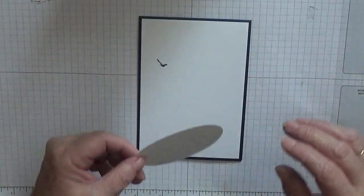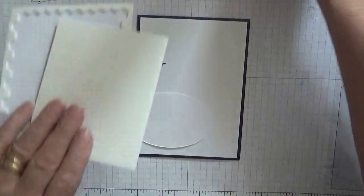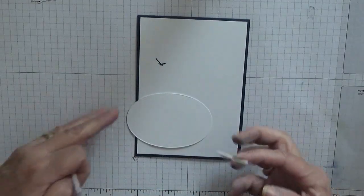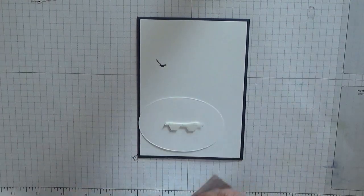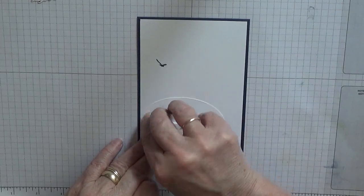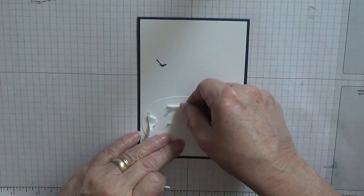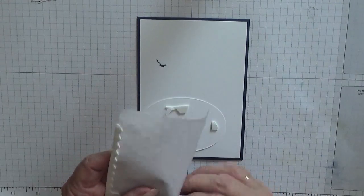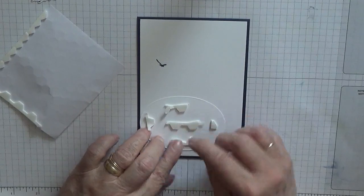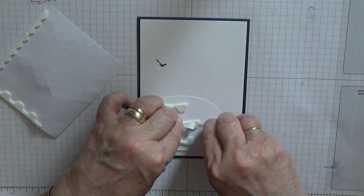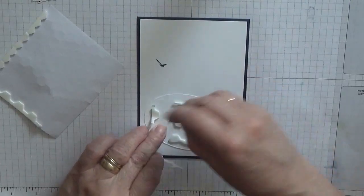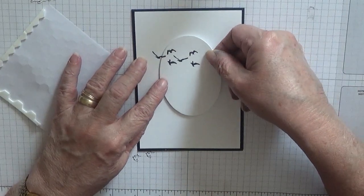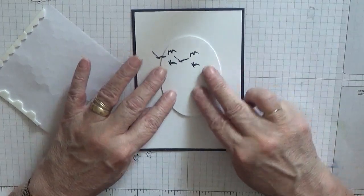Now we need some dimensionals. Put that down the middle. Just ripping these off any old way. Take backings off. Now we've just got to line this up with our bird, with his wing. There we are.